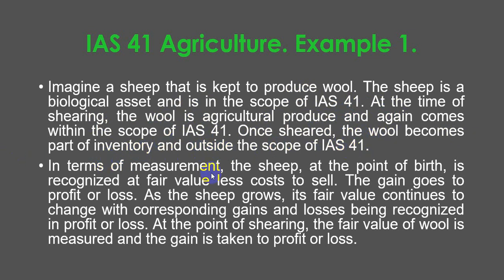In terms of measurement, the sheep at the point of birth is recognized at fair value less costs to sell, and the gain goes to profit or loss. As the sheep grows, its fair value continues to change, with corresponding gains and losses being recognized in profit or loss. At the point of shearing, the fair value of wool is measured and the gain is taken to profit or loss.